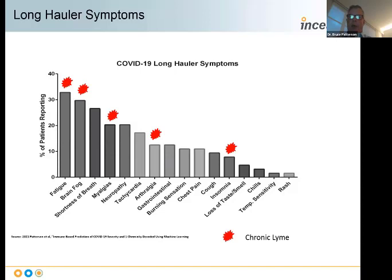We first published in June 2021 a study we had been working on for over six months looking at symptoms in long COVID. We identified fatigue, brain fog, shortness of breath, myalgias, arthralgias, neuropathy, and POTS. If you overlay the symptoms of chronic Lyme, you see very similar predominant symptoms: fatigue, brain fog, post-exertional malaise, myalgias, arthralgias, and insomnia.